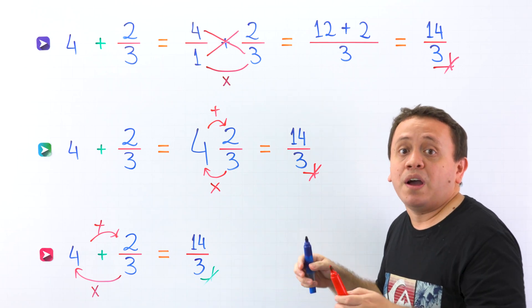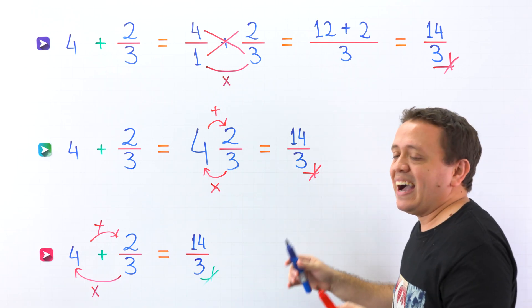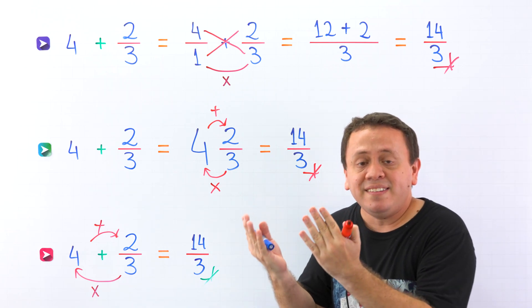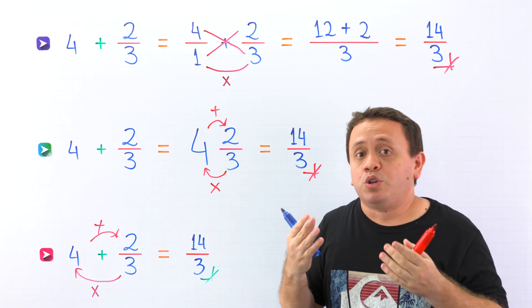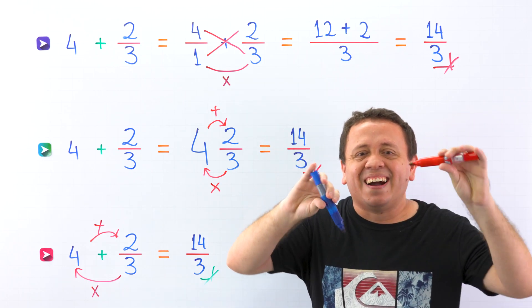As you can see, with the three methods, we have the same answer: 14 thirds. However, each method has advantages and disadvantages. Which one is the best? Leave your answer in the comments.